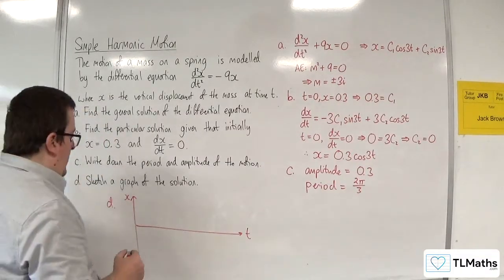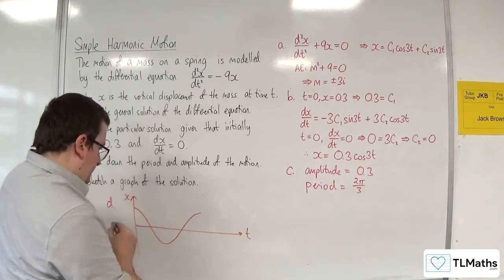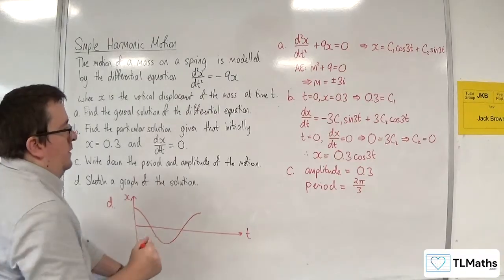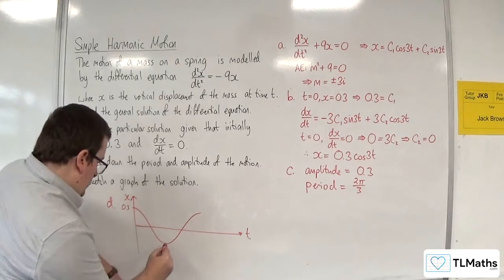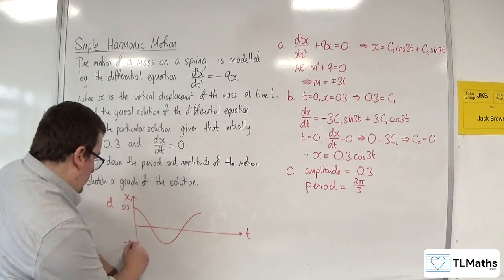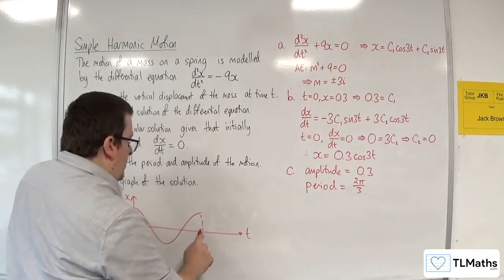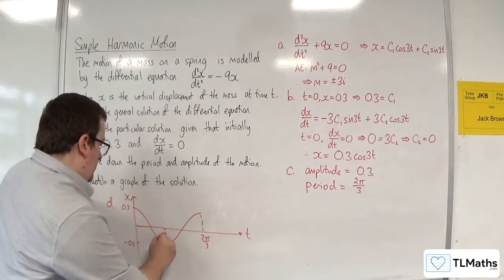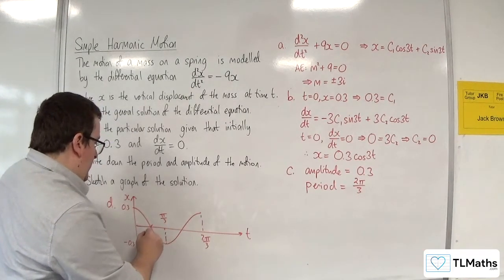So we're going to have the curve looking like this. One's not particularly good, but okay. And that's 0.3. That's minus 0.3. So I'm just going to do one oscillation. And that's 2pi over 3. So that's pi over 3. So that's going to be pi over 6.